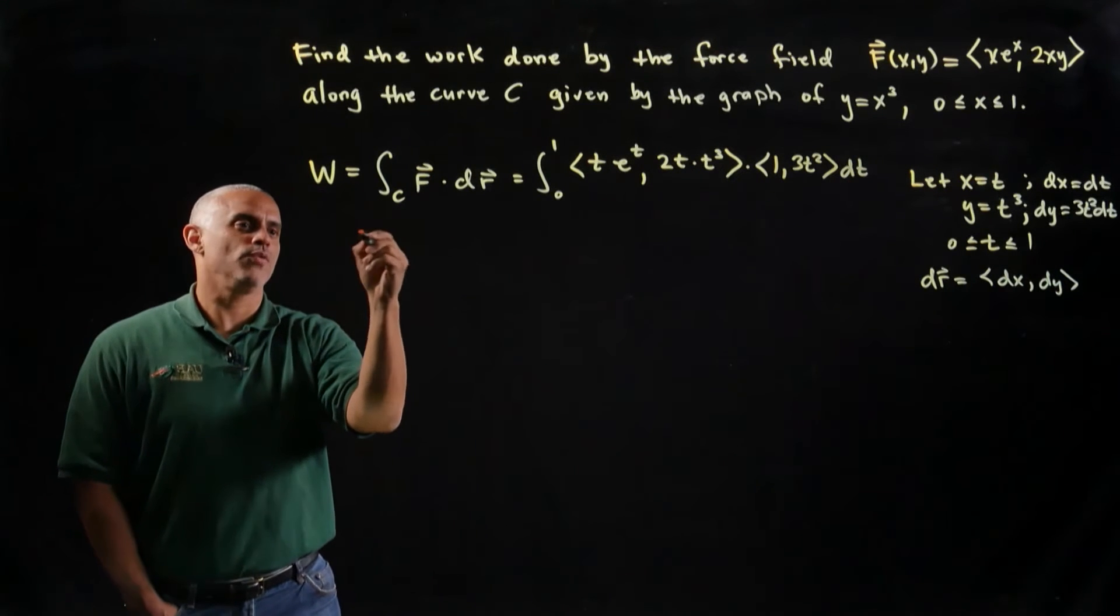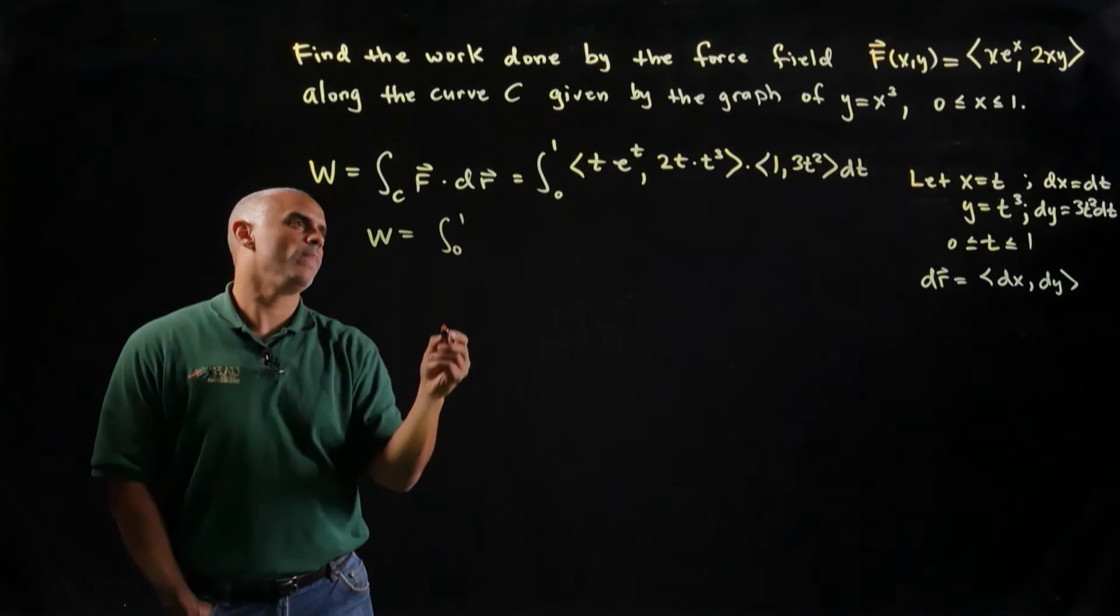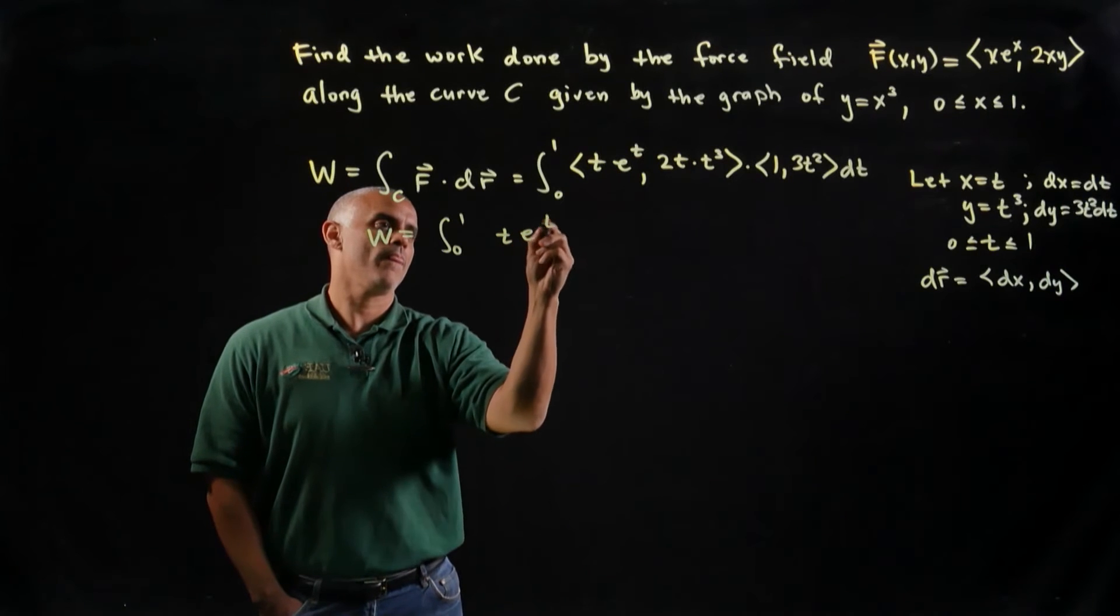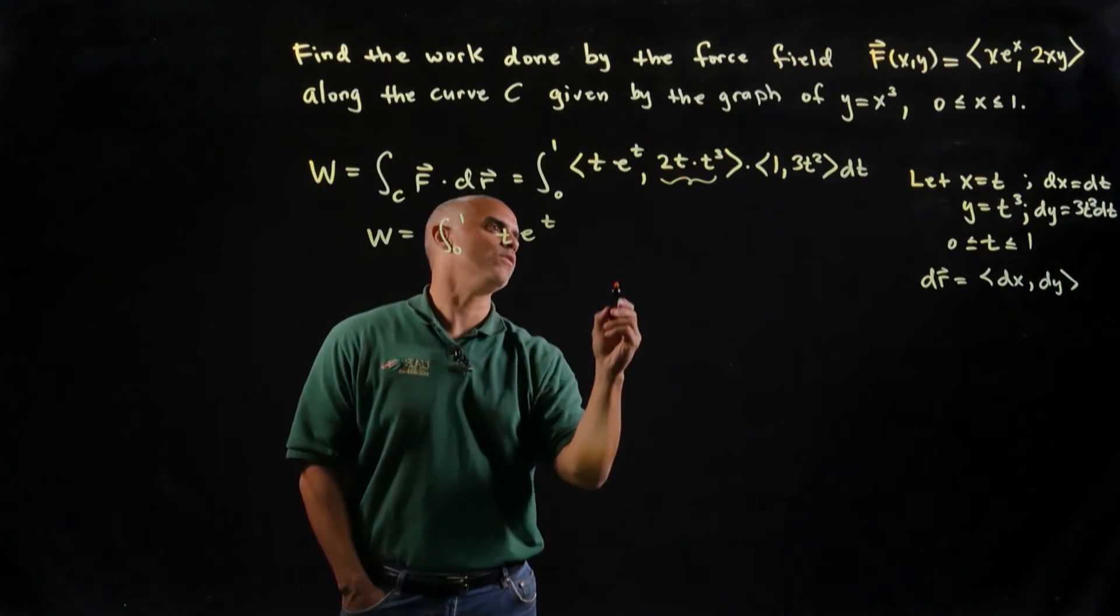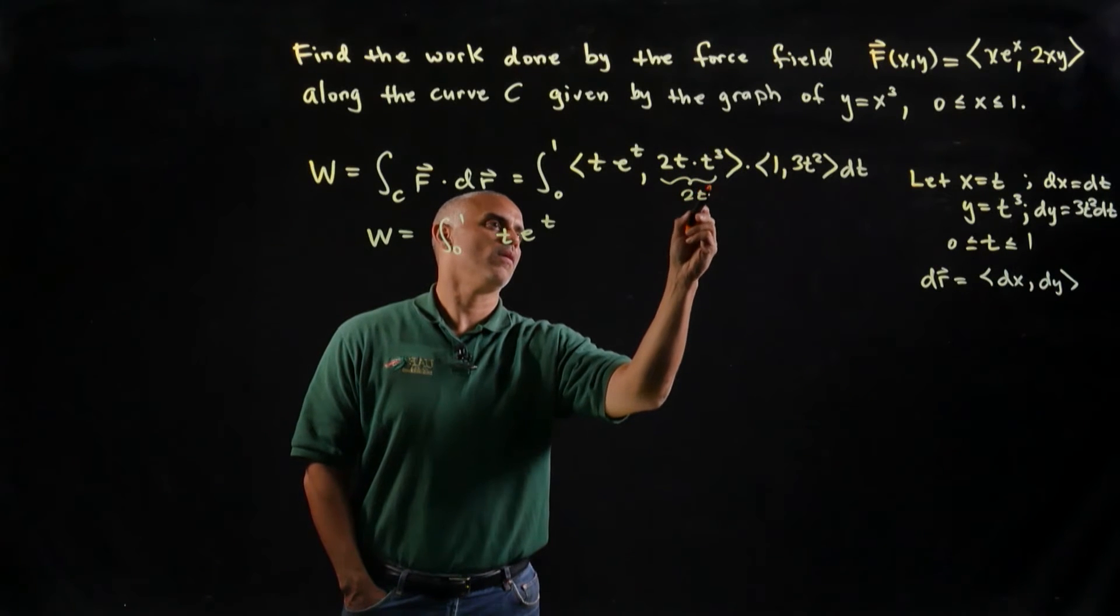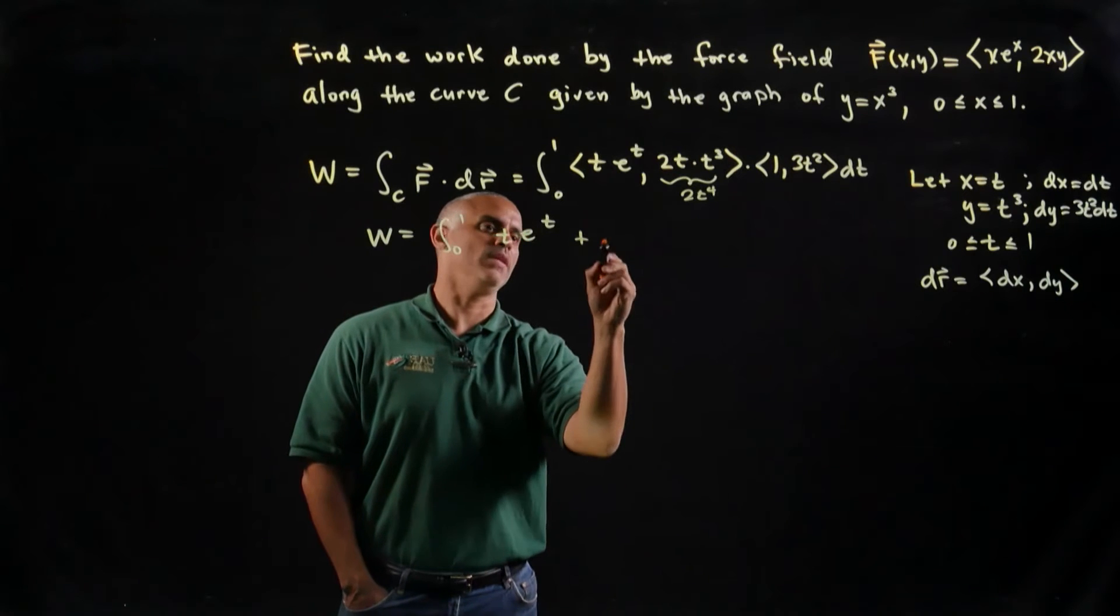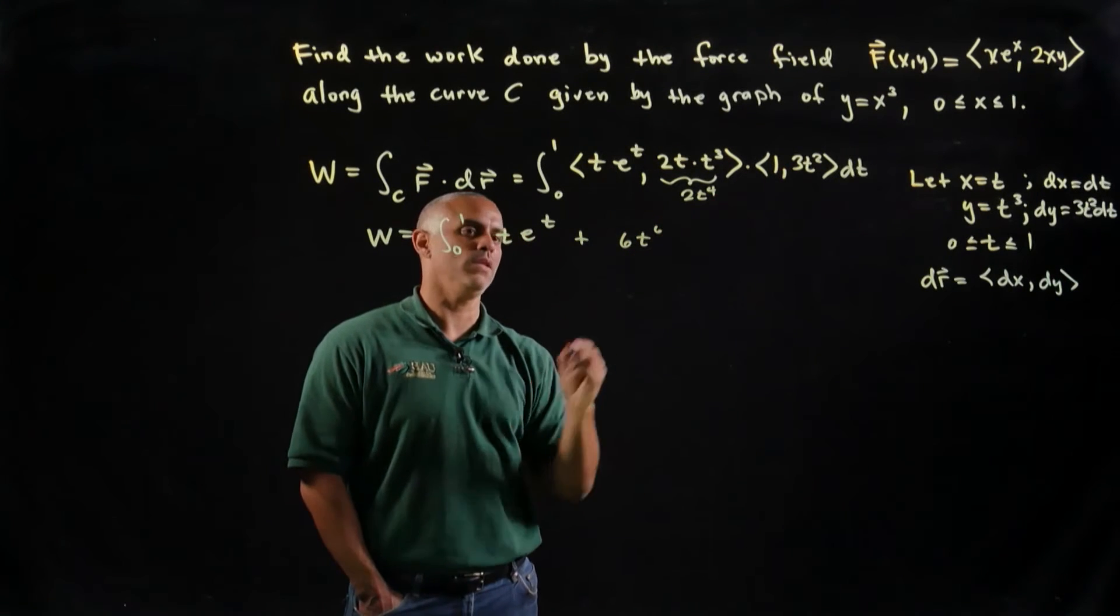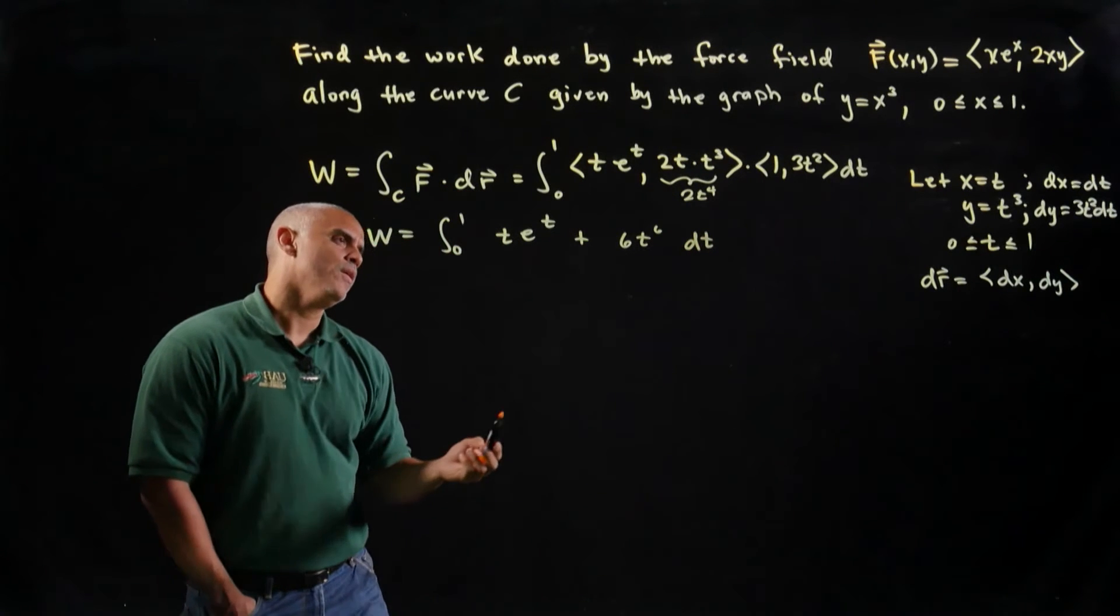So now, it should be pretty straightforward. I get the integral from 0 to 1, if I take my dot product, I get te^t. If I simplify this, I get 2t to the 4th. So I get a plus, 2 times 3 is 6, t to the 4th and t squared gives me 6t to the 6th dt.